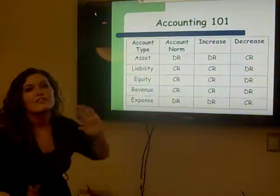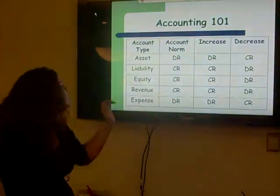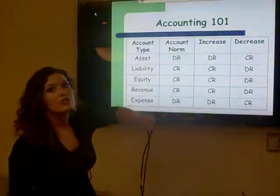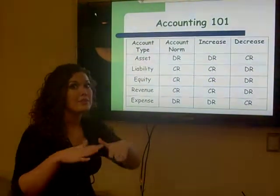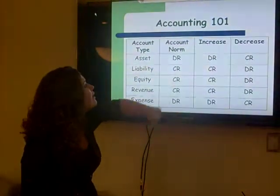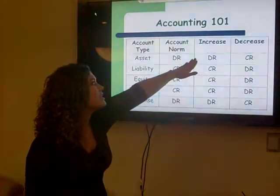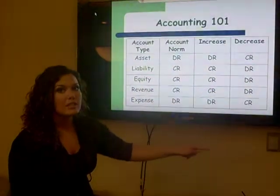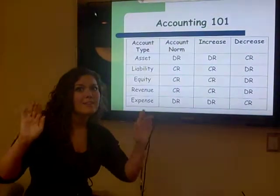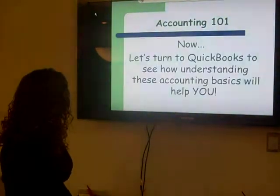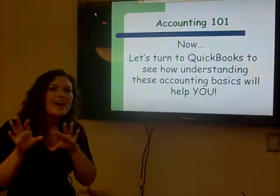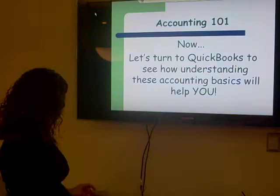Let's take our asset for example — that would be a bank. The normal balance of your bank should be a debit, right? Unless you're overdrawn, and then it's going to be a credit balance. So it's normally a debit balance. Your bank increases with the debit and decreases with the credit. Let's turn to QuickBooks so that I can help you understand how these debits and credits apply to you specifically.